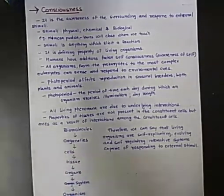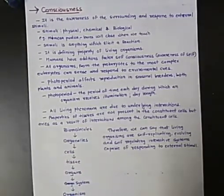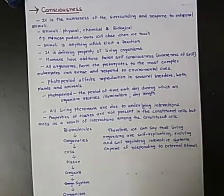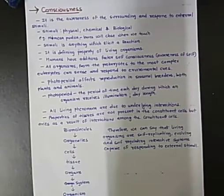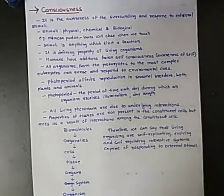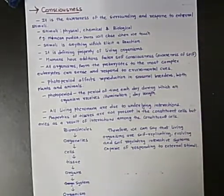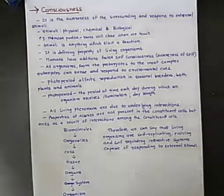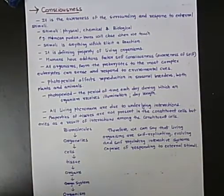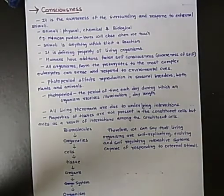Consciousness is not only in humans but also in plants. For example, Mimosa pudica is a plant where if we touch the leaves, they close. Some plants grow in the direction of the sun, towards light. So the stimulus can be physical, chemical, or biological.